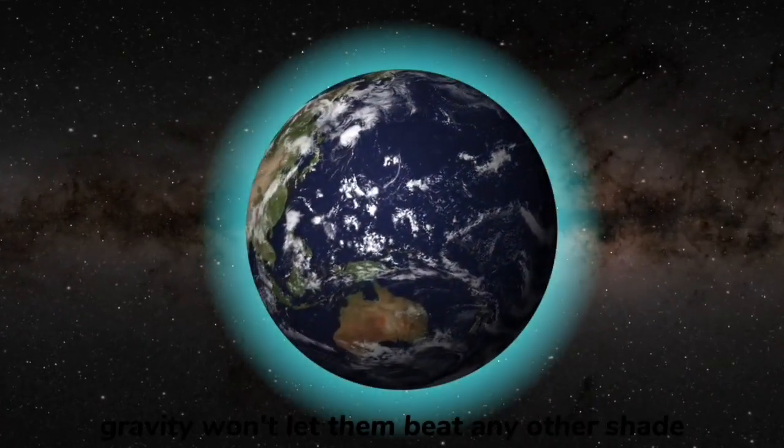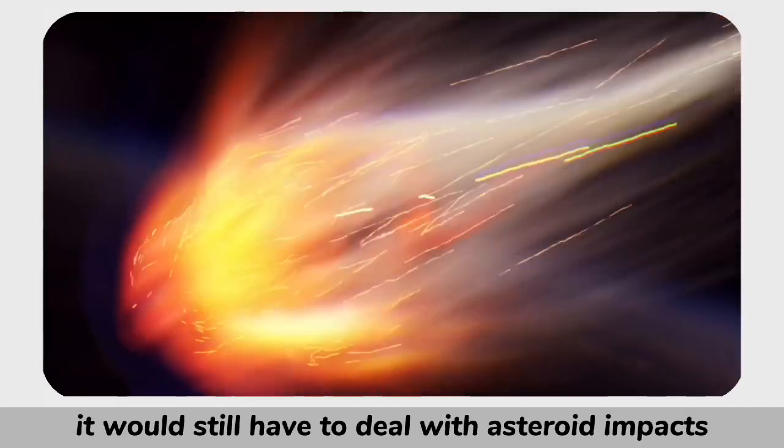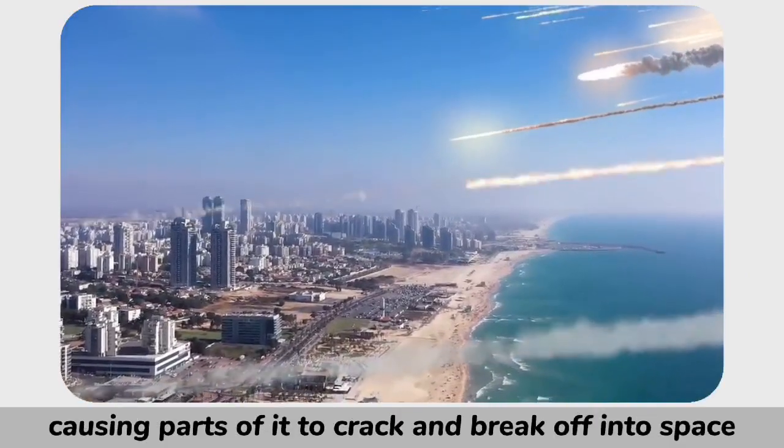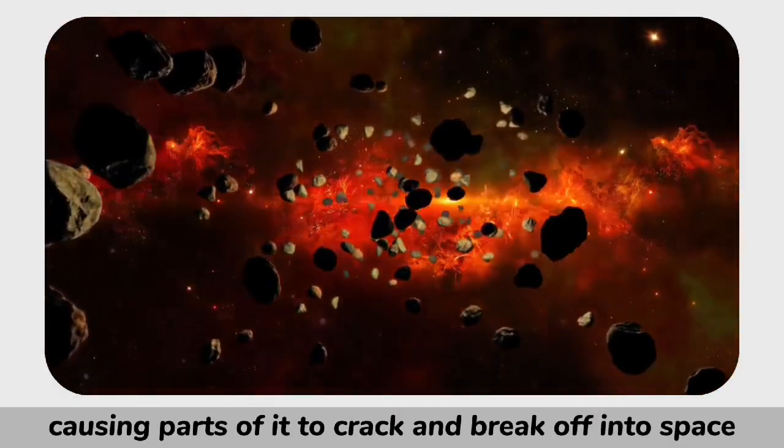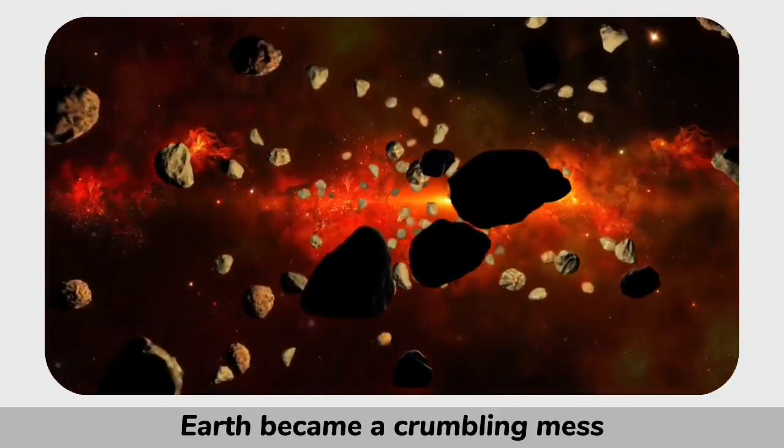If some unknown force kept pizza Earth from collapsing, it would still have to deal with asteroid impacts. A big enough collision could shake the disk, causing parts of it to crack and break off into space. It wouldn't take many of these impacts before pizza Earth became a crumbling mess.